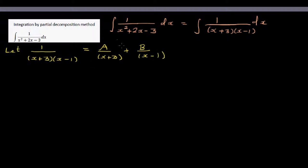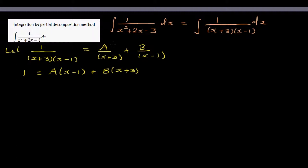If you simplify the right hand side, you can compare the numerator 1 with A times x minus 1 plus B times x plus 3. On the right hand side, we cross-multiply — multiplying x minus 1 to the first fraction and x plus 3 to the second — so the denominators are the same and we can compare numerators.